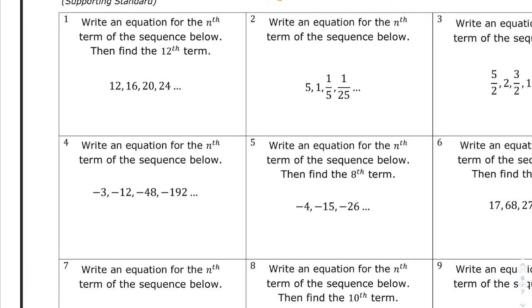So the nth term means to find the formula, so we want a_n. To find a_n, the first thing we're going to do is find d. We have a plus 4, plus 4, plus 4. So the common difference is 4.